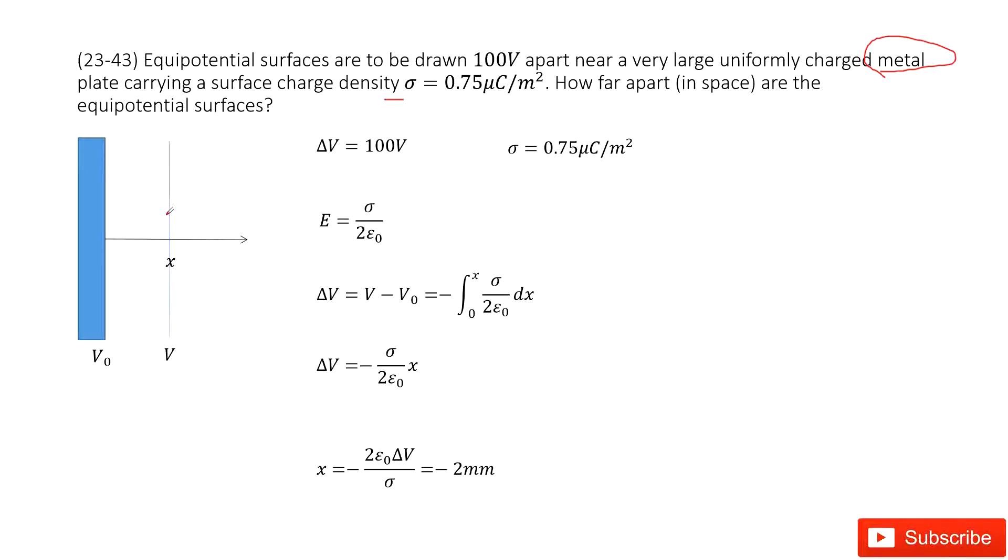So we can draw the equipotential surface, this one. And the initial is just along the surface. So this ΔV is V minus V₀ is just 100 volts. And the surface charge density σ is given. So we can see the charge distributed at this surface and also along this surface.